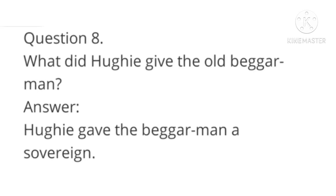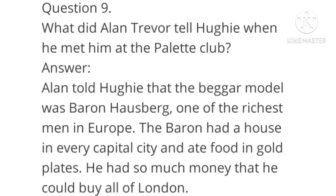Question number 8: What did Huey give the old beggar man? Answer: Huey gave the beggar man a sovereign — a gold coin worth one sterling. Question number 9: What did Alan Trevor tell Huey when he met him at the Palette Club? Answer: Alan told Huey that the beggar model was Baron Hussberg, one of the richest men in Europe. The Baron had a house in every capital city and ate food on gold plates. He had so much money that he could buy all of London.